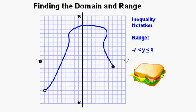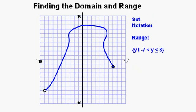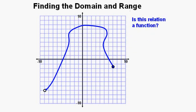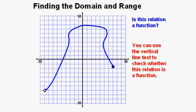For the inequality: y is greater than negative 7 and y is less than or equal to 8, with y sandwiched between negative 7 and 8. In set notation: y such that y is greater than negative 7 and less than or equal to 8. In interval notation: open parentheses, negative 7, comma, 8, followed by a closing bracket. One final question — is this relation a function? If you're unsure, use the vertical line test to check.